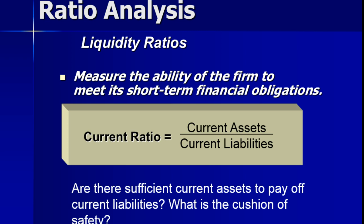One measure could be current assets divided by current liabilities. This can measure a firm's liquidity and give an idea of their safety net.